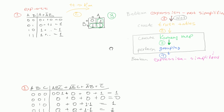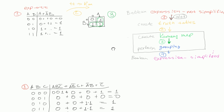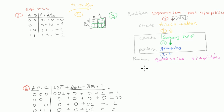I reorganized our whiteboard a bit to have some space to perform the task for today. That is step 4: getting a simplified expression out of the group.